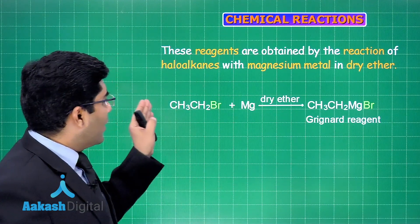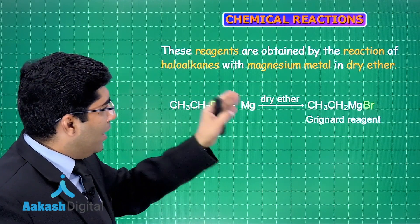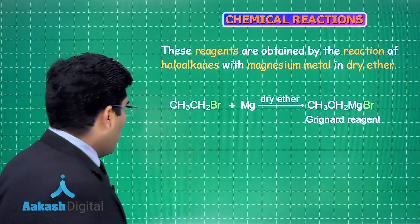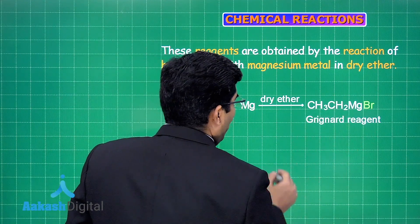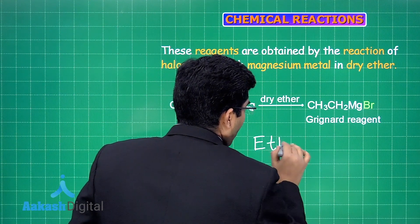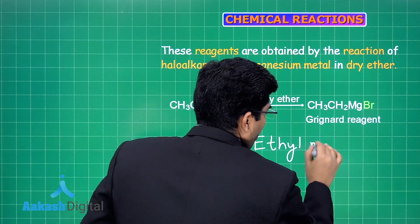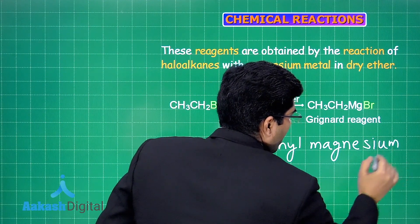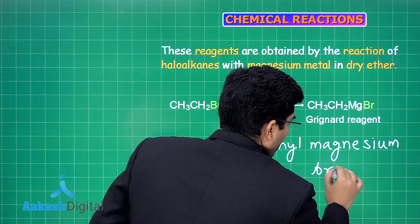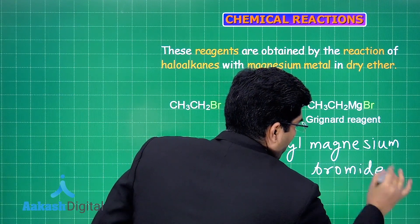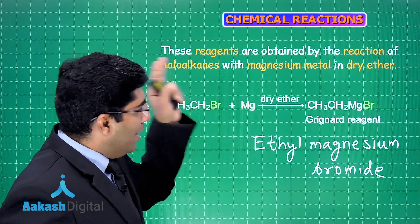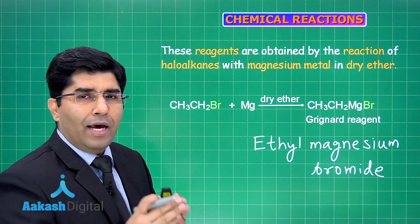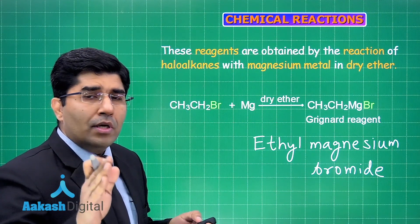When ethyl bromide reacts with magnesium, it forms ethyl magnesium bromide — an example of a Grignard reagent. This particular compound is named ethyl magnesium bromide. To prepare it, simply react magnesium with an alkyl halide in dry ether.